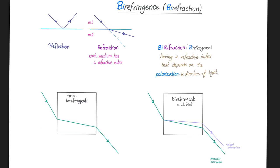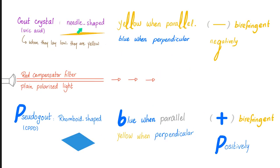Gout crystals are needle-shaped, yellow when parallel, blue when perpendicular, and they are strongly negatively birefringent. Pseudogout crystals are rhomboid-shaped, blue when parallel, yellow when perpendicular — the opposite of gout — and they are weakly positively birefringent.